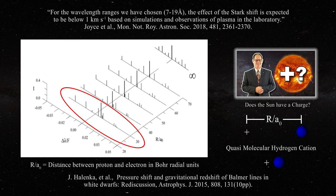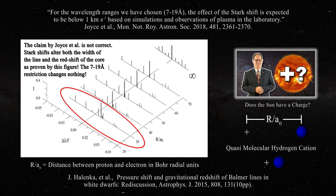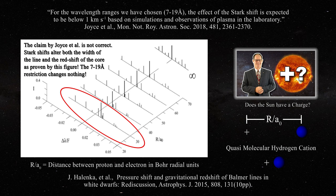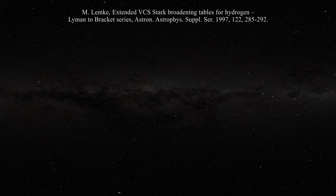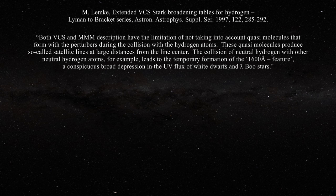Joyce et al. actually discount the effect of Stark redshifts. For the wavelength ranges they have chosen, 7 to 19 angstroms, the effect of the Stark shift is expected to be below 1 km per second based on simulation and observations of plasma in the laboratory. They then cite the electric arc paper we just discussed, which could have absolutely nothing to do with real conditions on a white dwarf. A key paper presenting Stark-broadening tables in astrophysics discusses two models, MMM and VCS, but the details of the models themselves are not important — what they say is important.